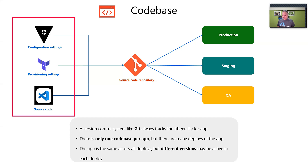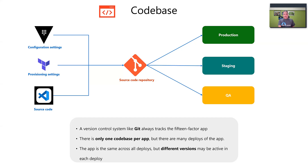The choice of tool doesn't matter — it can be VS Code, Notepad++, IntelliJ, Eclipse, or PyCharm. The key idea is that anything related to your application is versioned, giving you a track of how the application evolved from day one through production. The version control system tracks all changes to the 15-factor application, and there is only one codebase per application.